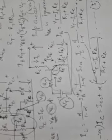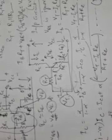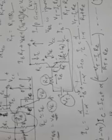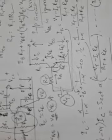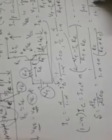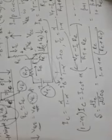The stability factor is calculated by differentiating this equation with respect to ICO. Simplifying dIC/dICO, we get: S equals 1 divided by (1 minus alpha plus alpha times RE divided by (RE plus RT)).